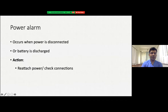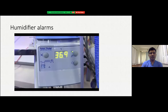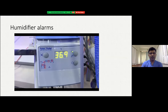A power alarm occurs when power is not connected or the battery is discharged — this can be an emergency as it can result in ventilator shutdown and must be corrected immediately. The humidifier has 6 alarms: for the heater adapter, heater wire, heater plate, proximal temperature sensor, distal temperature sensor, and airway. I will show each alarm and how to troubleshoot them.